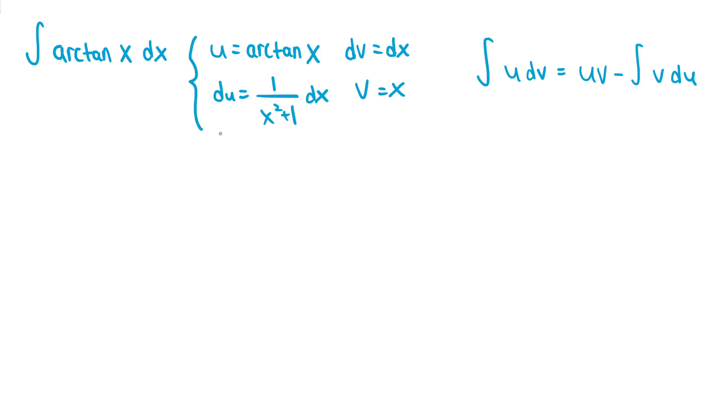So if we apply integration by parts, the integral of arctan dx is equal to uv, which is arctan of x times x, so that's x arctan of x.